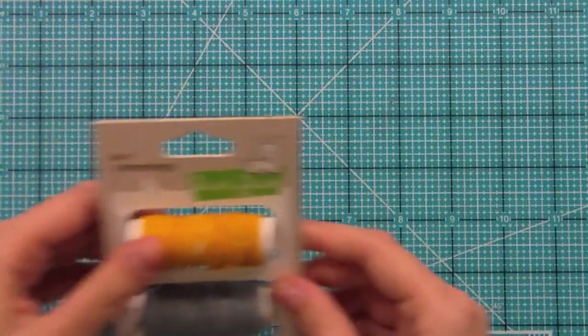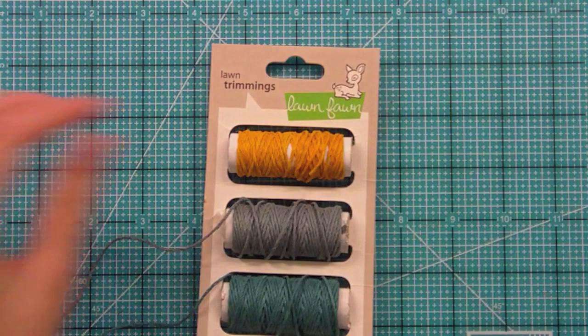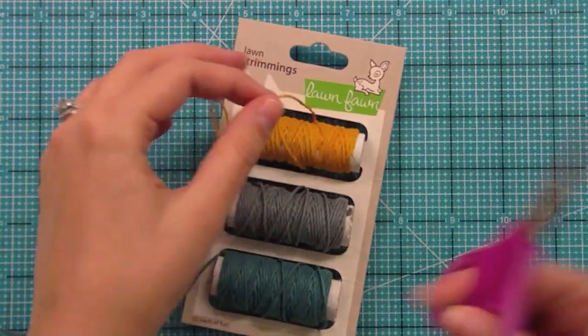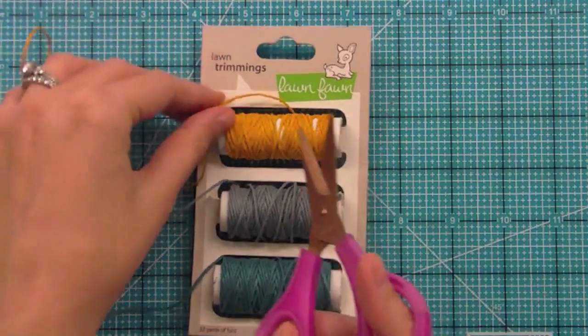Right here I'm going to grab some of the yellow color so it really pops off the page. I'm just going to spin some off just like this. It's really fun to do it that way. And just trim a piece off. I'll trim a longer piece.